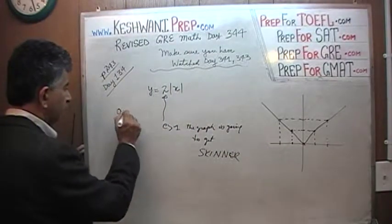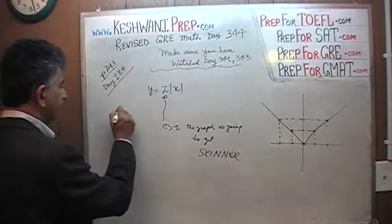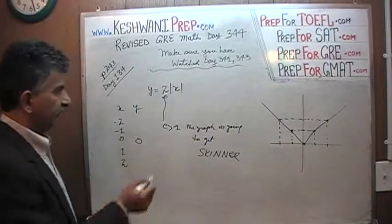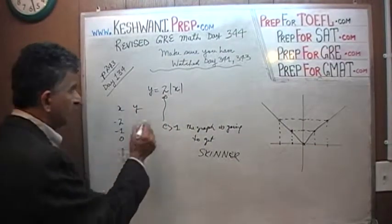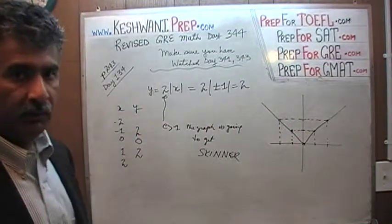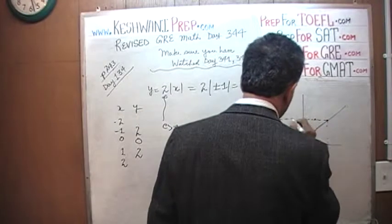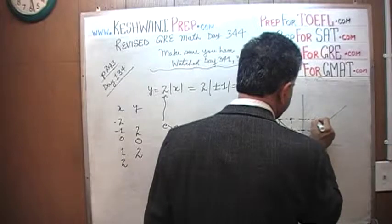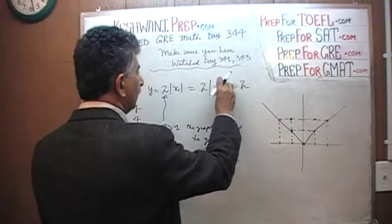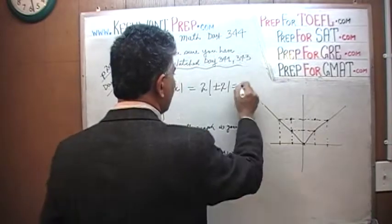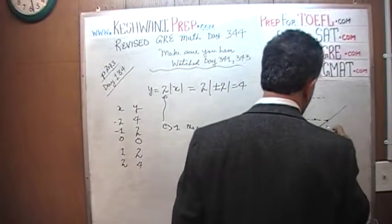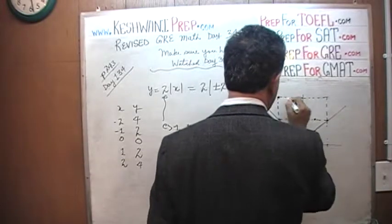When x is 0, y is still 0, so it starts here. When x is 1 or negative 1, y is now 2. When x is 2 or negative 2, y is going to be 4. This is our new graph — it became skinnier. So that was the first part.